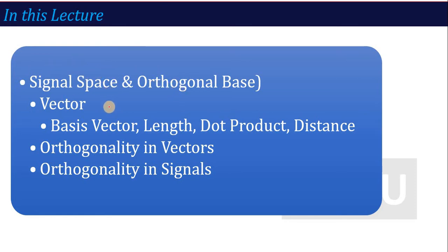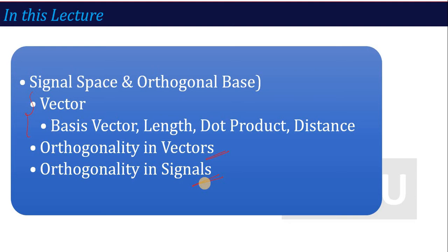What happens with vectors? We will read about basis — what is the basis vector, how to calculate the length, what is the dot product, how to calculate the distance between vectors. So what is vector space? And with vector space, we relate to signals. Orthogonality in vectors as well as orthogonality in signals — we are going to discuss here. So let's start our lecture on signal space and orthogonal basis.